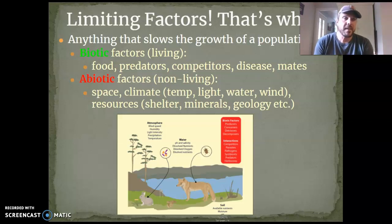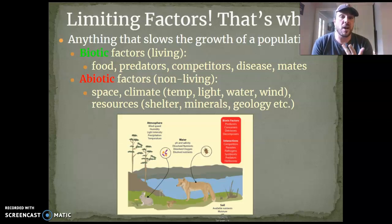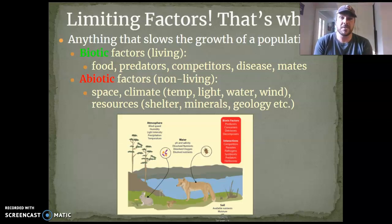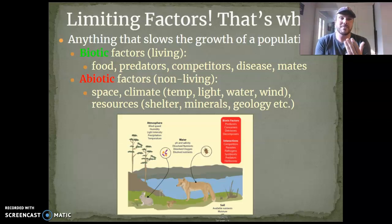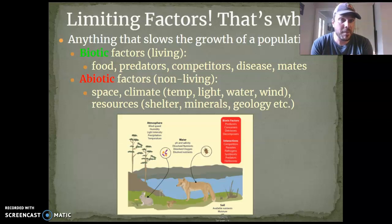There are biotic factors, which are things that are alive — 'bio' means life. So things that are alive: if I don't have enough food, or if there are lots of predators trying to eat me, or if there are lots of other species or even my own species competing for resources and I'm not as good at competing, they're going to get the food and I'm not. Disease — if I'm being killed or hurt by disease I can't survive as well. Mates — if I can't find a mate, I can't reproduce, and my species will not grow.